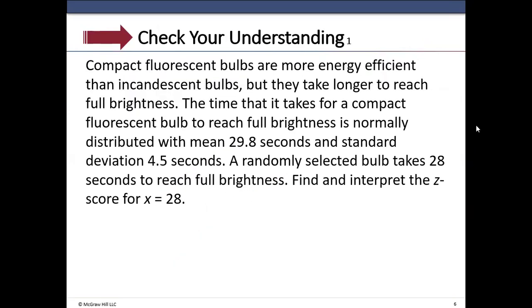So here is an example. The time for a compact fluorescent bulb to reach full brightness is normally distributed with mean of 29.8 seconds, standard deviation 4.5 seconds. A randomly selected bulb takes 28 seconds. So the x value is 28.